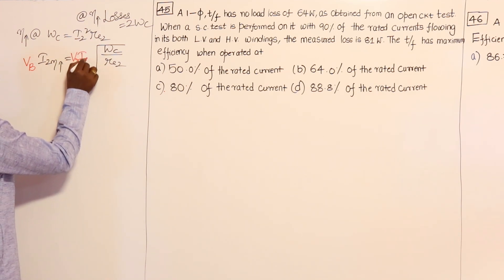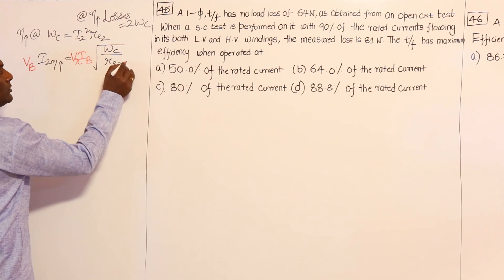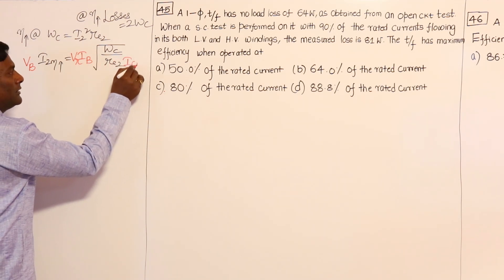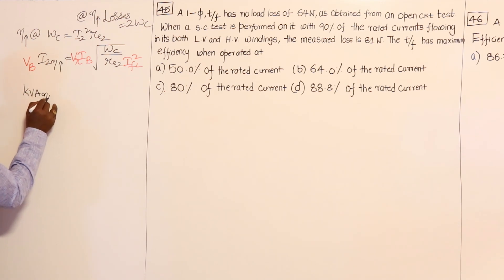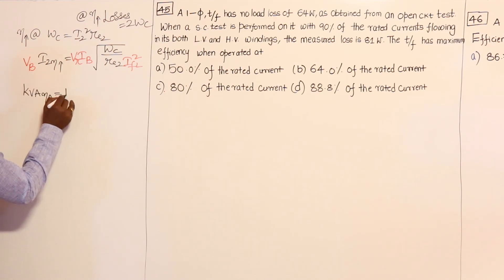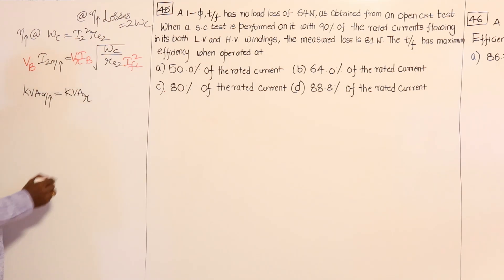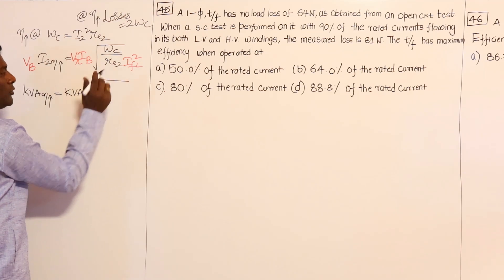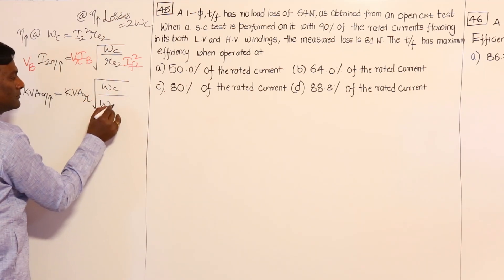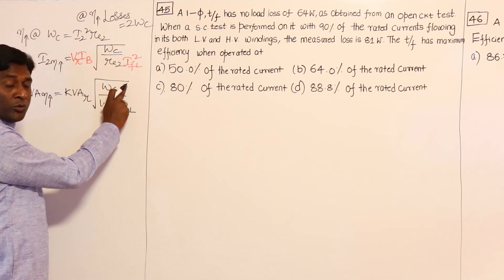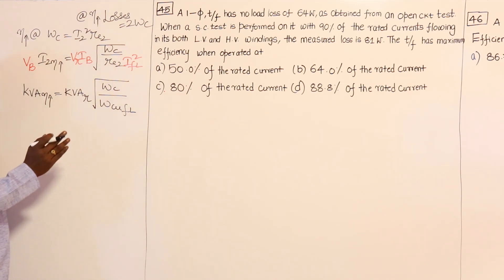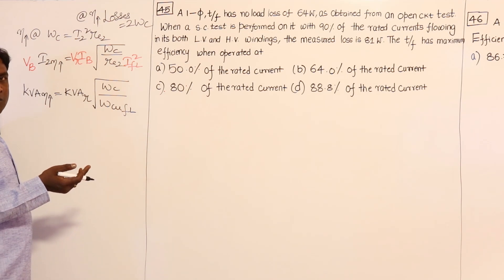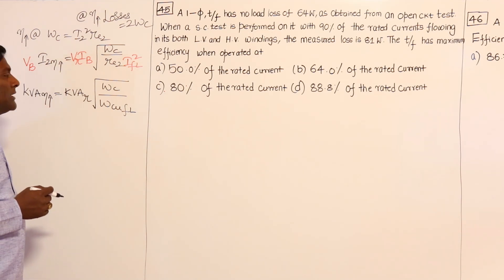Adding the base value of current, which is nothing but full load current, with IFL² inside the root, the equation becomes: KVA at which maximum efficiency occurs equals KVA rated times the square root of (core loss divided by full load copper loss). Core loss is obtained from the OC test, and full load copper loss is calculated from the SC test. Note that the SC test may or may not be conducted at full load conditions, since from the SC test we derive linear parameters.